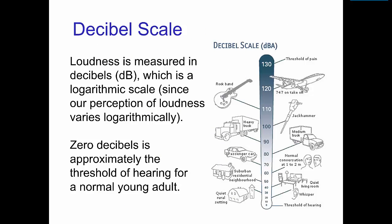Sound wave amplitude is usually expressed in terms of a loudness measured in decibels. This is a logarithmic scale since our perception of loudness varies logarithmically. The scale is calibrated so that zero decibels is the threshold of hearing for an average young adult.